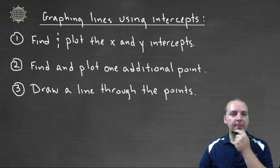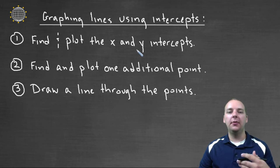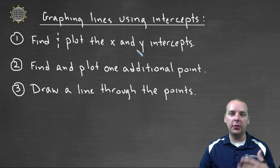So here's some steps to graph lines using intercepts. Step one is we're going to find and plot both of the intercepts. I'm going to assume you already know how to do that. If you're a little shaky on finding intercepts or not sure what to do, we have a video that was right before this one that you can watch that will talk about how to find x and y intercepts.